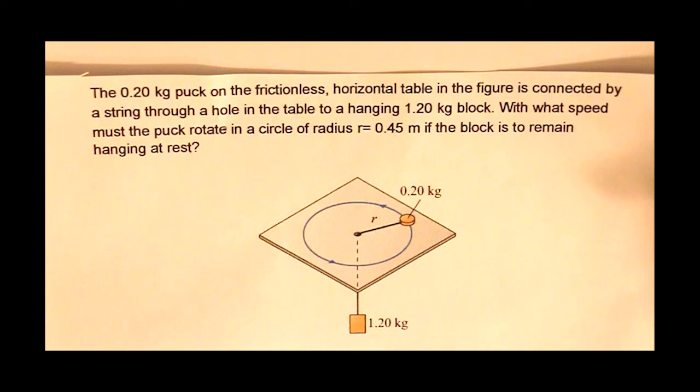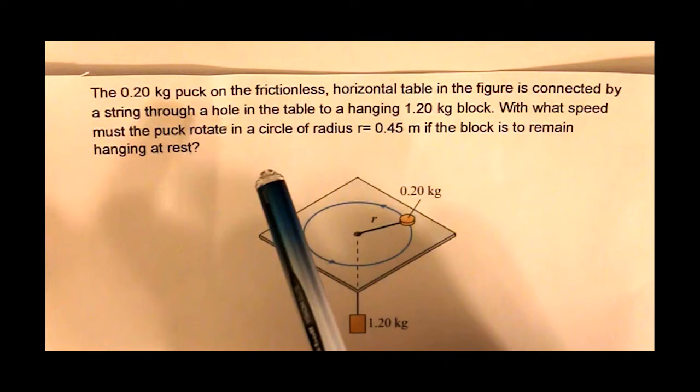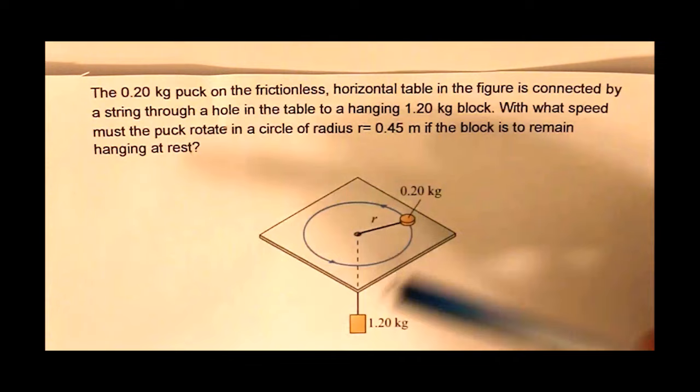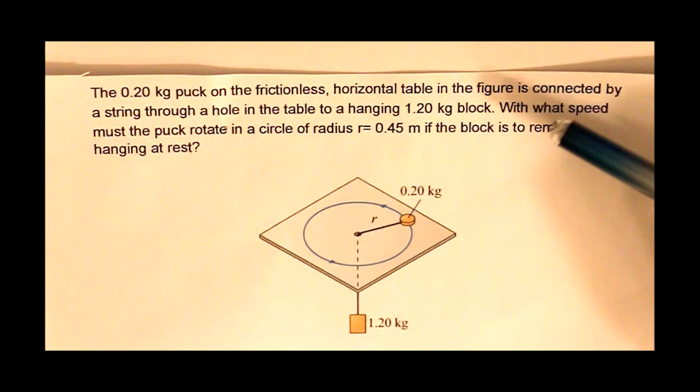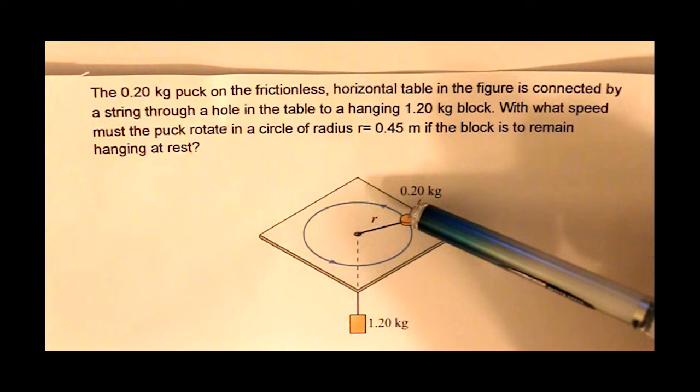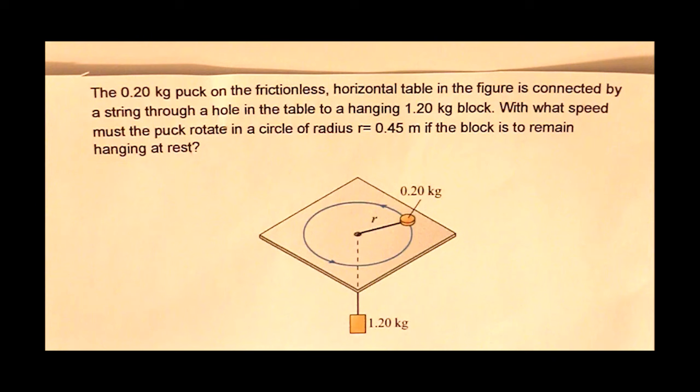In the figure is connected by a string through a hole in the table to a hanging 1.2 kilogram block. This is 1.2 and this is acted upon by the force of gravity. With what speed must the puck rotate in a circle of radius 0.45 meters if the block is to remain hanging at rest?